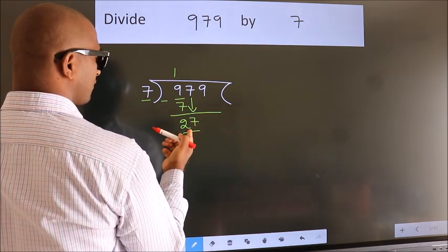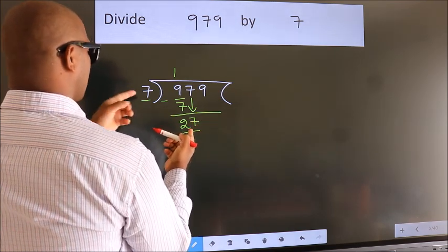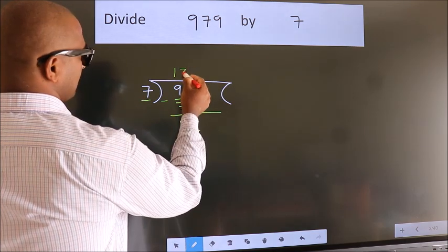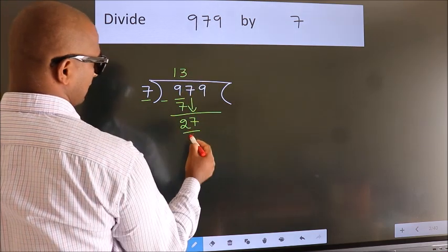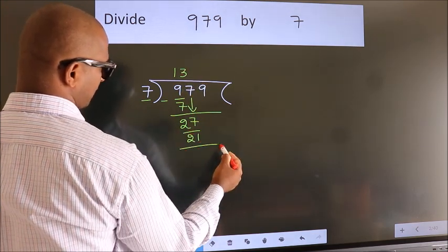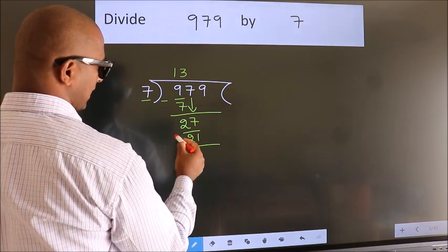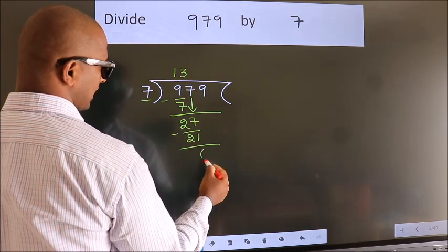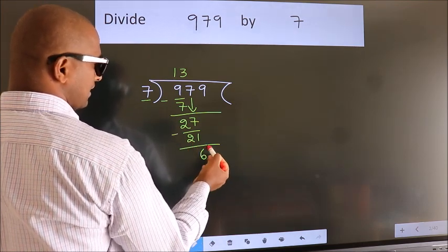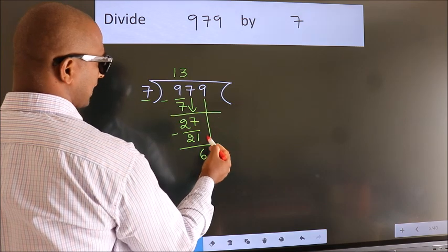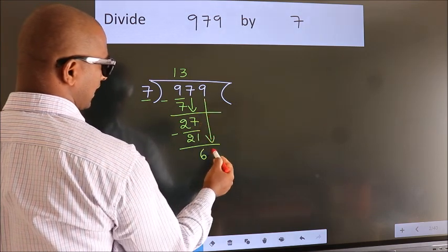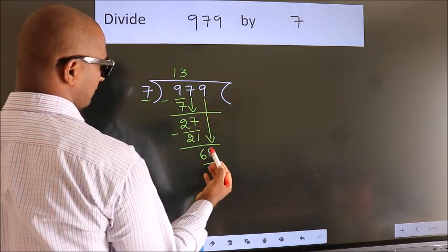A number close to 27 in the 7 times table is 7 threes, which is 21. Now we subtract and we get 6. After this, bring down the beside number — so 9 comes down, giving us 69.